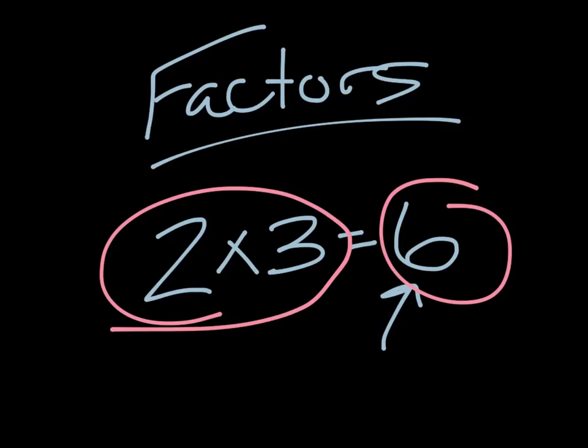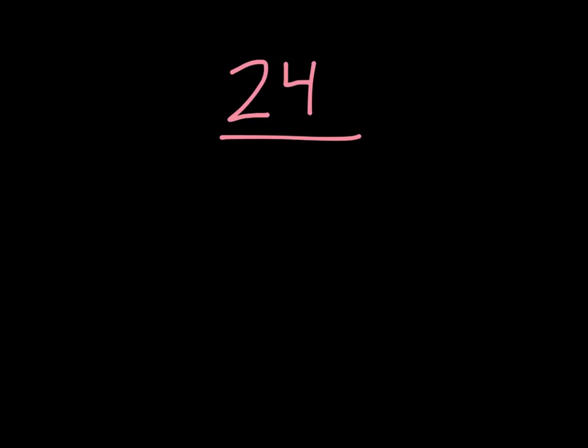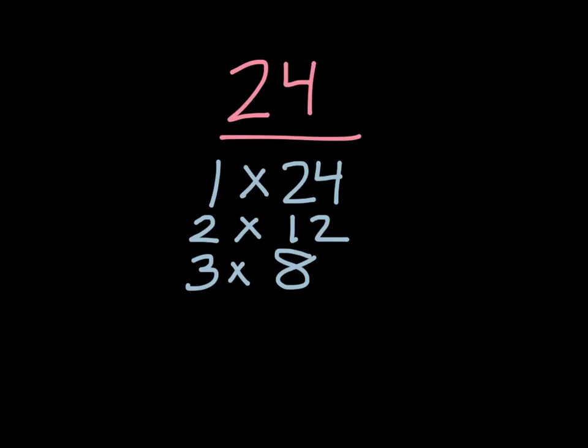So let's start by finding the factors of, let's say, 24. When we find the factors of 24, we start with 1 times 24, because those multiplied together give us 24. We go in order, so we know what comes after 1. It's 2. 2 times what? 2 times 12. Can I go to 3? 3 times 8 gives us 24. What about 4? Does 4 work? 4 times 6. That works.